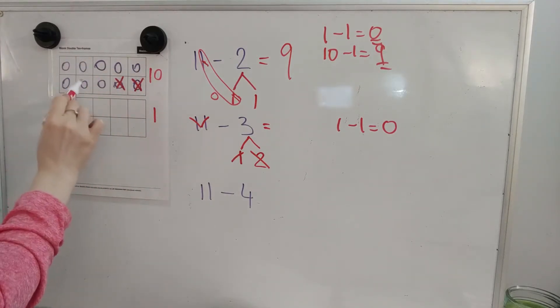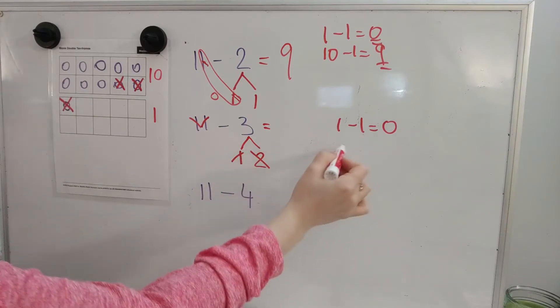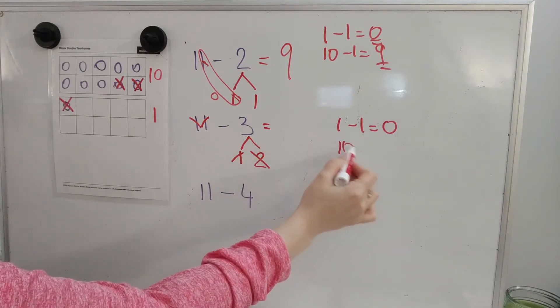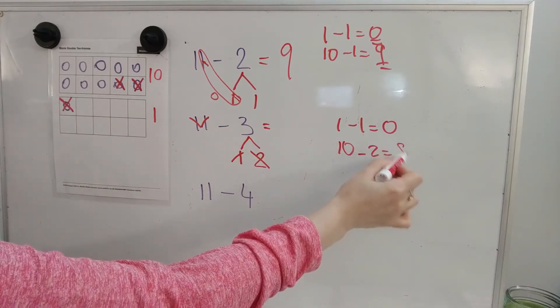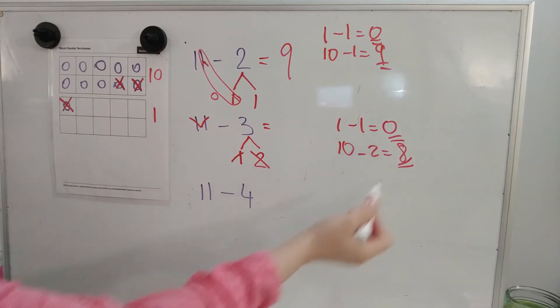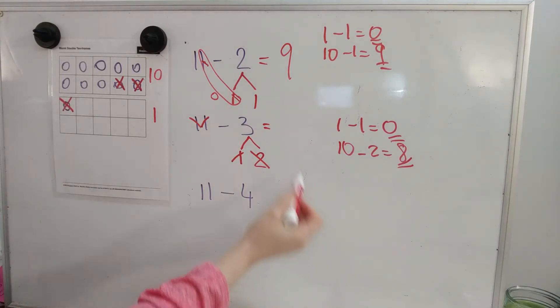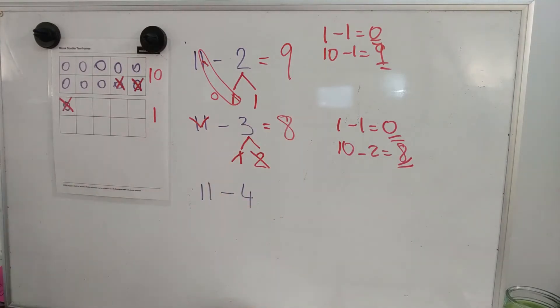5, 6, 7, 8. 10 minus 2 equals 8. Add those leftovers. 0 plus 8. Our answer is 8.